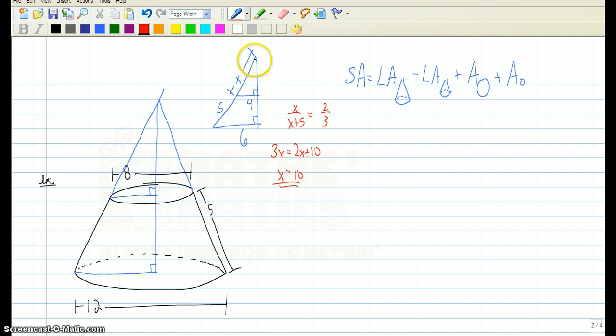10 is going to be the slant height for the small cone and 15 will be the slant height for the big cone.